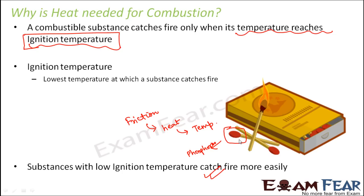A substance will not catch fire or undergo combustion on its own. Every substance has an ignition temperature, and external heat needs to be applied so the substance reaches that ignition temperature. This is how we find that three criteria are very important for combustion: a combustible substance, heat, and air.